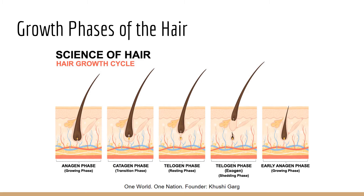The first phase is anagen — this is when the hair is growing and pushing older cells upward. It lasts about two to six years and is responsible for lengthening the hair. The next phase is catagen, which lasts about one to two weeks. This is the transition phase, where the hair follicle becomes smaller and starts to move away from the dermal papilla that gives it nutrients.